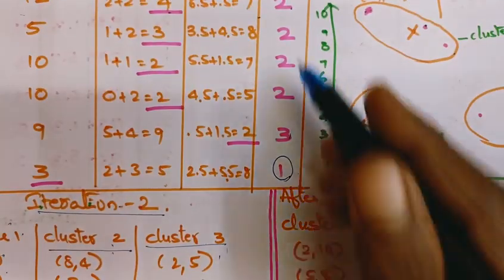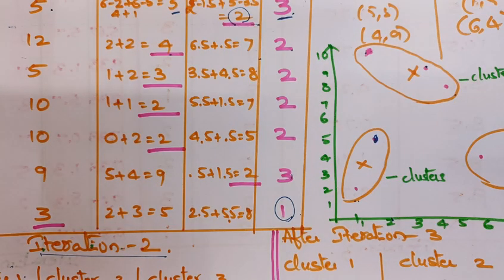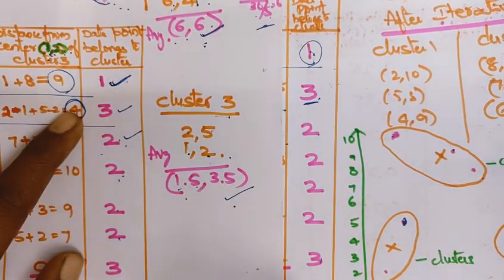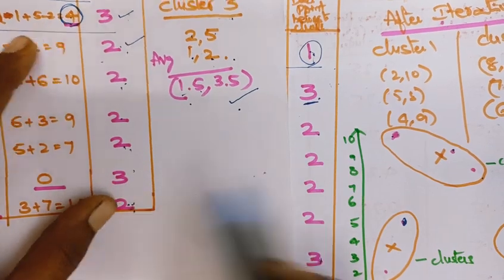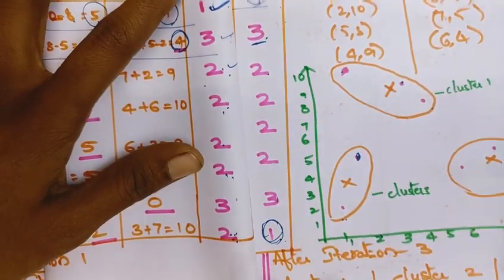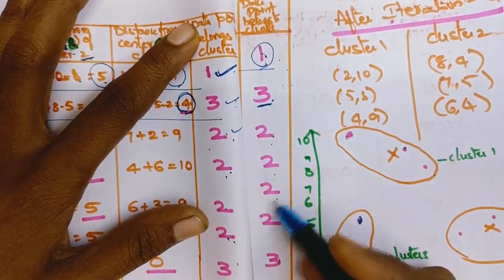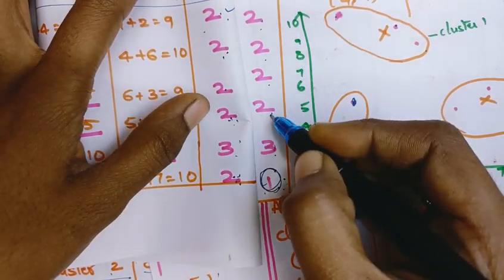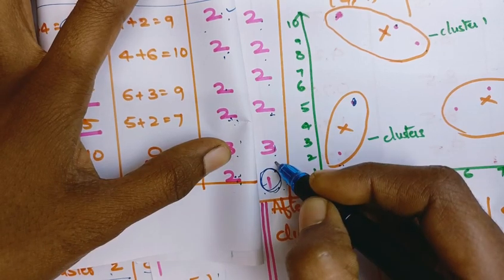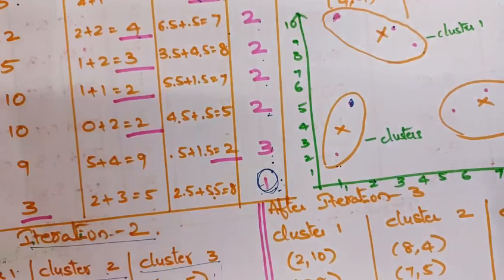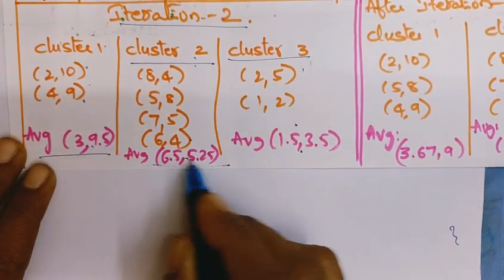To check convergence, compare cluster assignments from iteration 1 and iteration 2. If all cluster assignments are the same, stop the procedure. Here, iteration 1 and iteration 2 are not the same - one assignment differs - so we must perform iteration 3. Use the new centroids from iteration 2 and repeat the process.